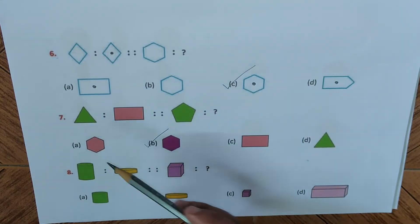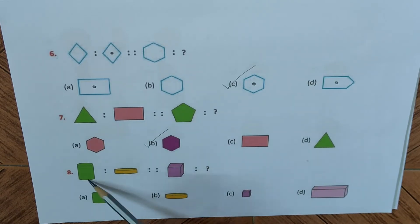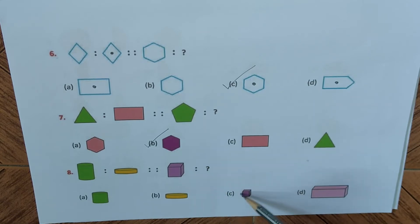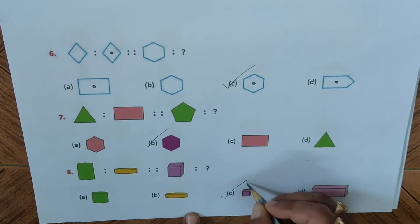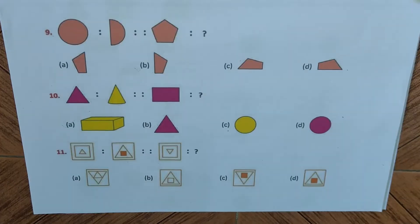This is a tall cylinder and this is a short cylinder — don't focus on color. This is a big cuboid and this is a small cuboid. So answer C is the right answer.